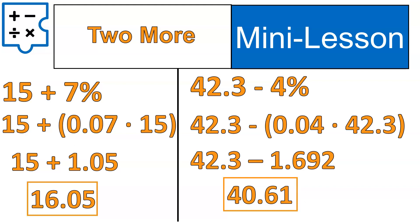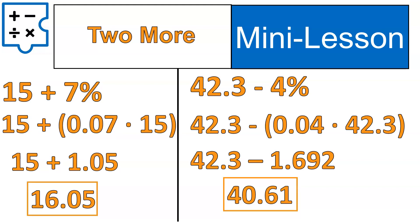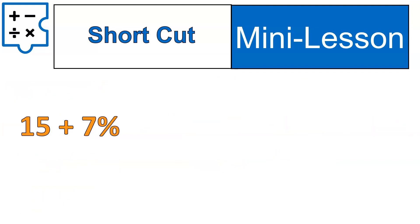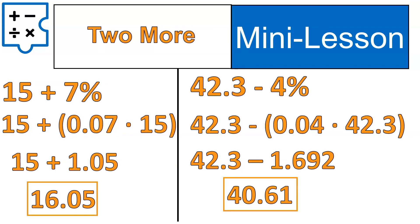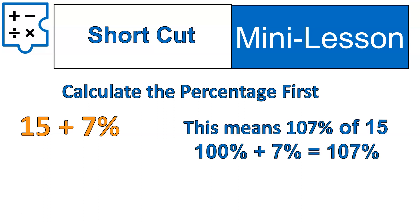Now, if you remember these numbers, they will help you on the next thing that we're going to do, which is moving into our shortcut. The same 15 plus 7%. We should get the same answer when we do this the shortcut way. I'm just letting you know that. So, the shortcut is to calculate the percentage first.